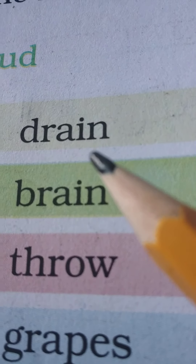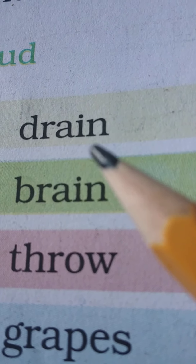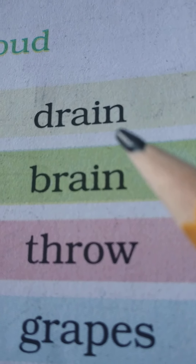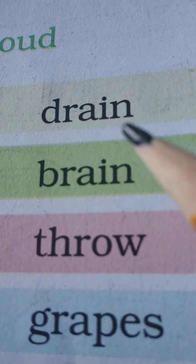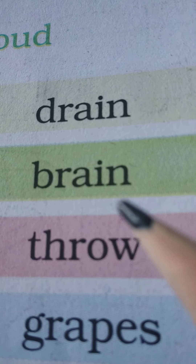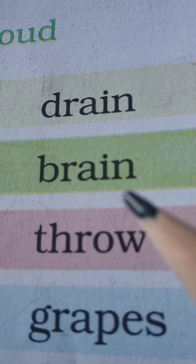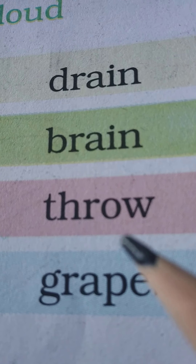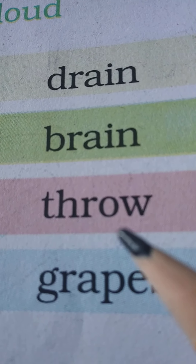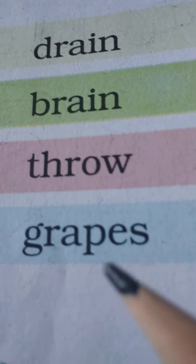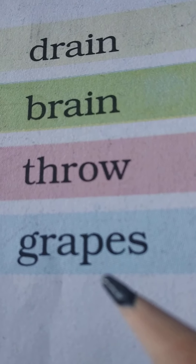Drain — a drain is where wastewater goes down. The drain is blocked. Brain — the part of your body that you use to think with. Throw — do not throw rubbish on campus. Grapes are delicious and juicy.